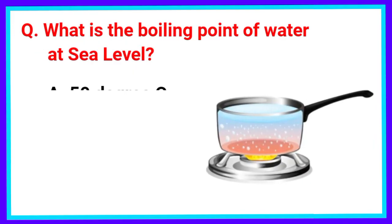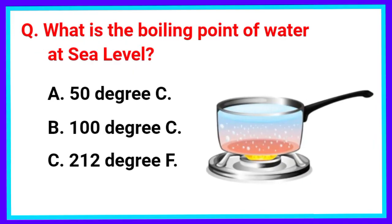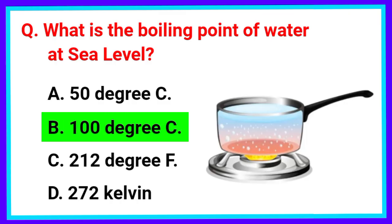What is the boiling point of water at sea level? The correct answer is Option C. 100 degree Celsius.